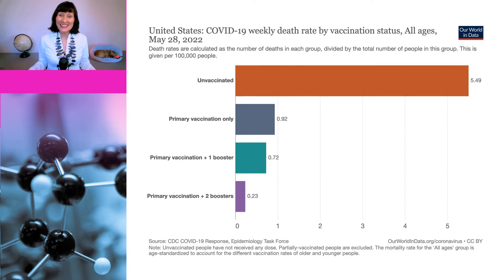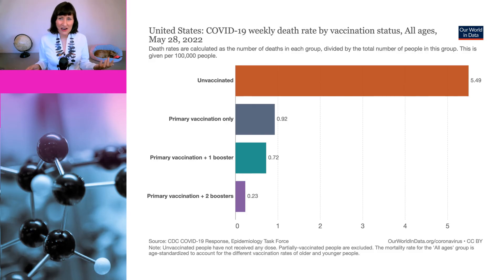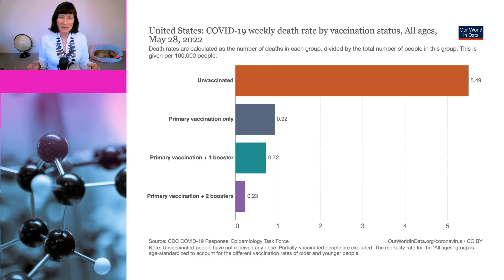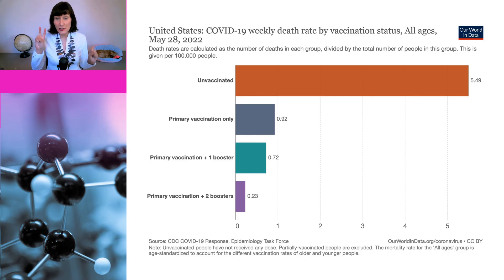This has been done in this graph here. It shows the age-standardised weekly death rate per 100,000 people from COVID in the USA. This is the death rate from COVID as a proportion of the whole population, not the death rate of people who catch COVID, which is of course much higher. As you can see, unvaccinated people are much more likely to die than vaccinated people, and the people most protected against dying are those who have had two boosters.